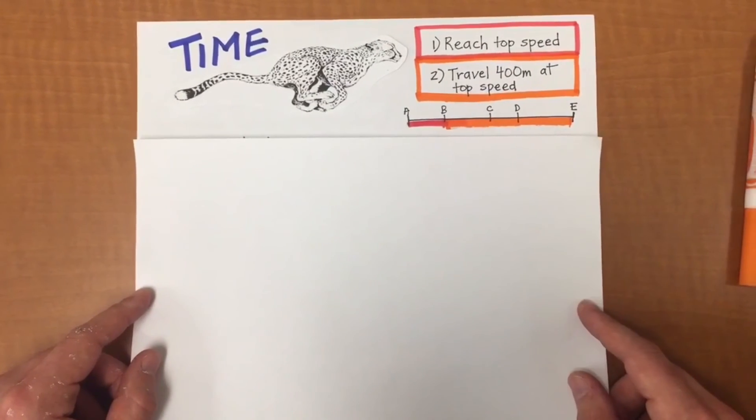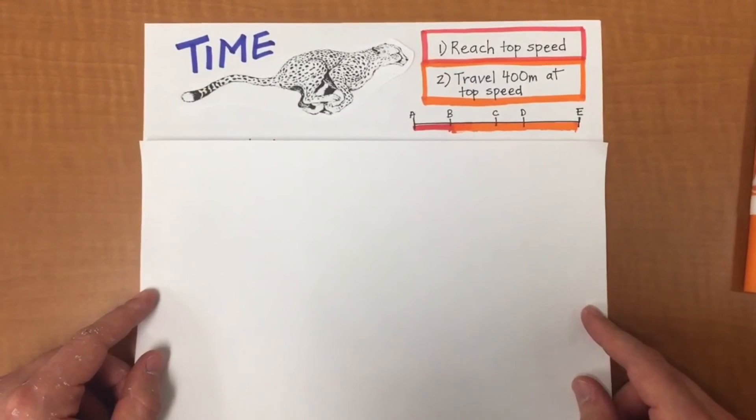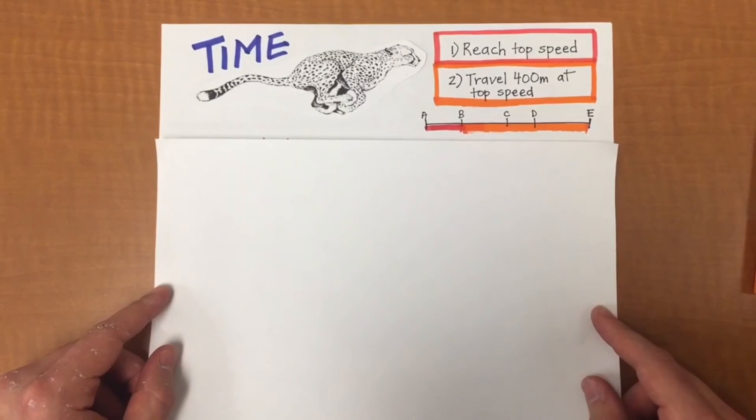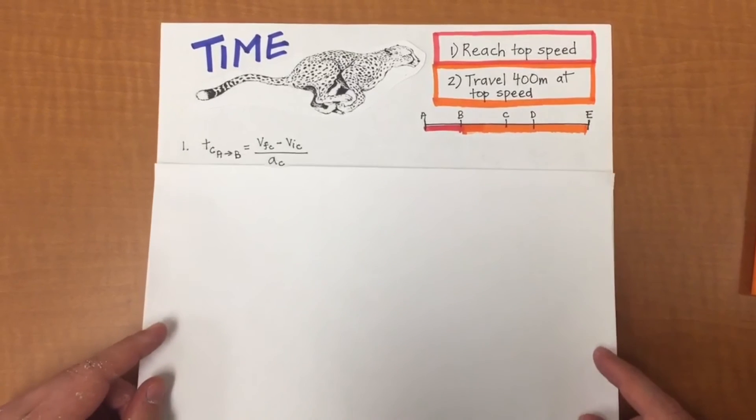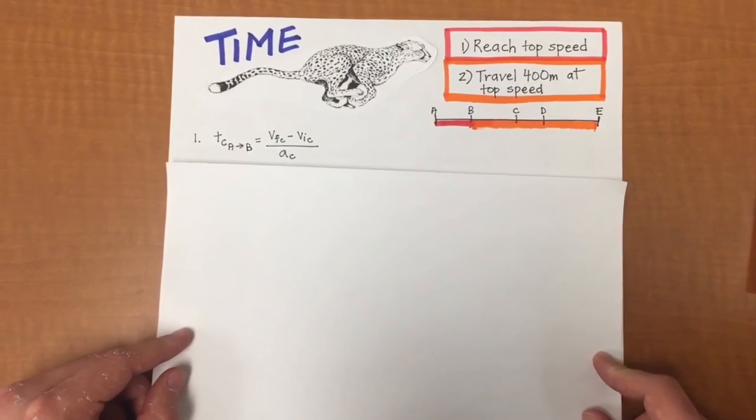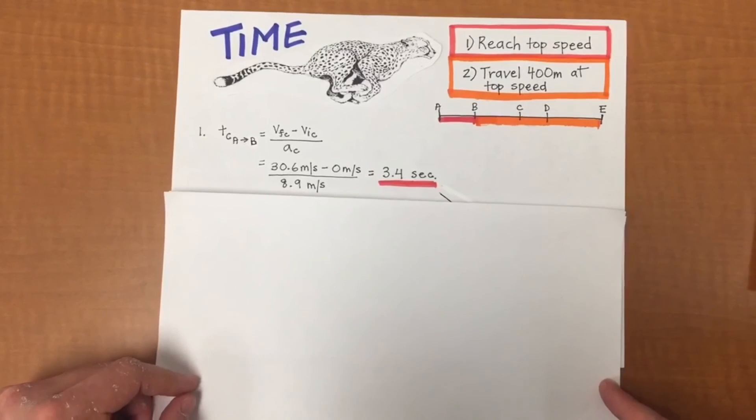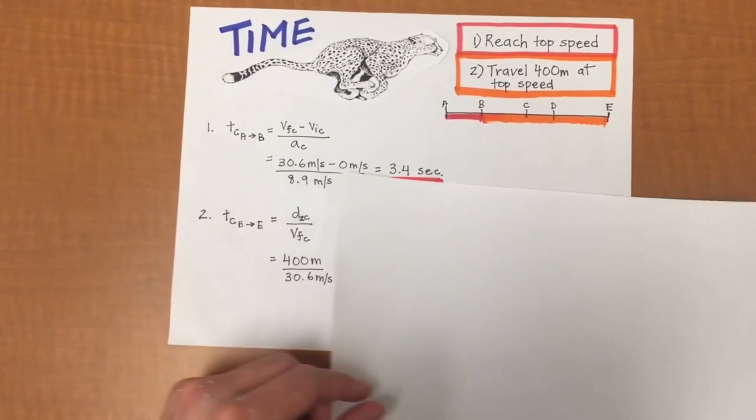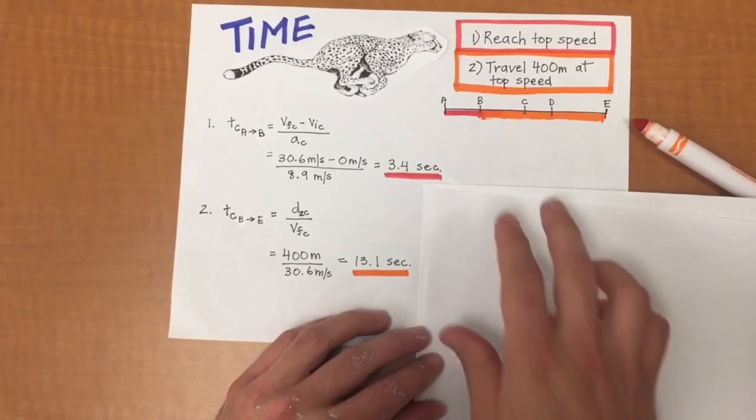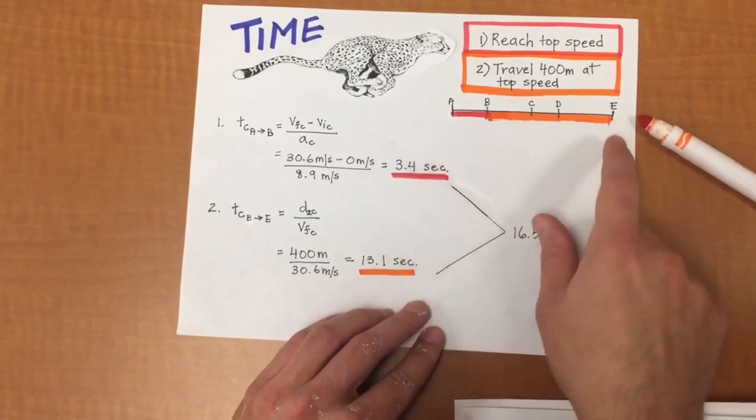Now next we need to figure out how long the cheetah actually spends running. In order to do that we need to figure out how long it takes for it to reach top speed and we also need to figure out, assuming the cheetah can only run at top speed for 400 meters, how long it spends at top speed. In order to do that we need to first look at the time spent accelerating. We know that the final velocity minus the initial velocity over the acceleration will give us 3.4 seconds, which is the amount of time the cheetah spends accelerating. We need to also then look at the amount of time the cheetah runs at top speed, which is 13.1 seconds. Together they give us 16.5 seconds, which is the total time it takes for the cheetah to move from point A to point E.